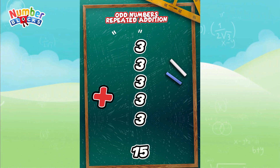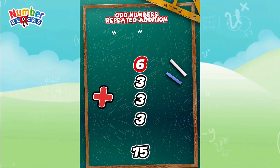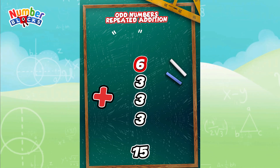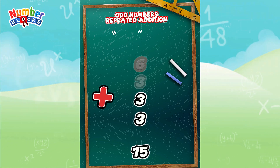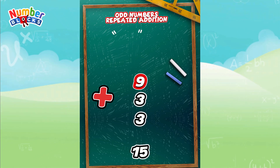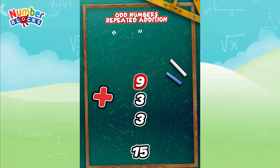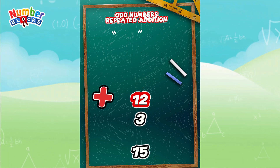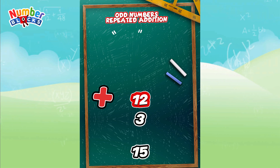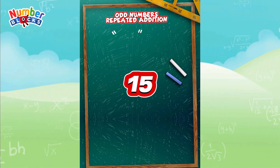3 plus 3 is equals to 6. 6 plus 3 is equals to 9. 9 plus 3 is equals to 12. 12 plus 3 is equals to 15.